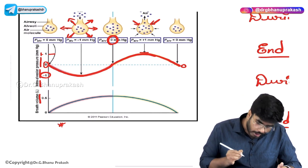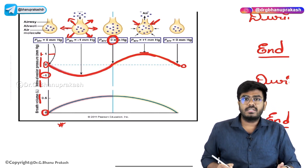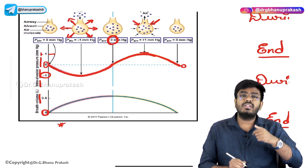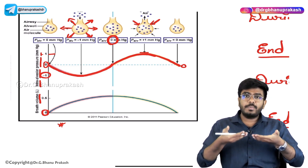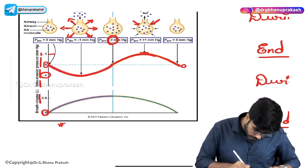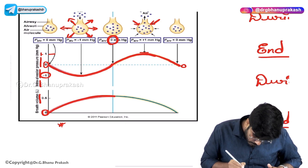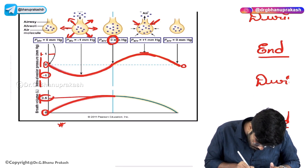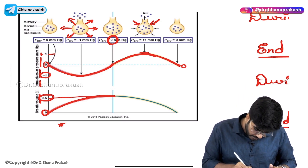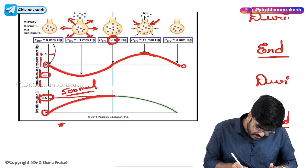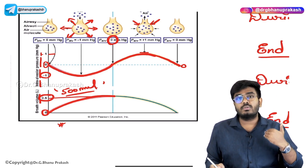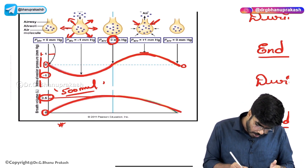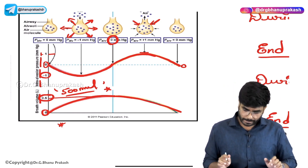Now discussing volume: at the start of inspiration, the volume of air entering the alveolus is 0. With inspiration, a certain volume of air enters the lungs — normally 0.5 liters, that is 500 mL. This is called the tidal volume — the amount of air that goes into the lungs with inspiration and comes out with expiration. The normal tidal volume is 500 mL.